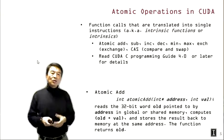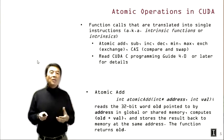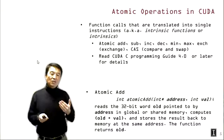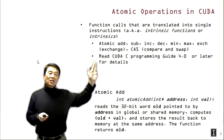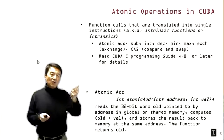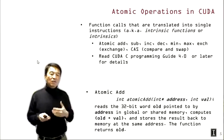Atomic operations in CUDA are made available to programmers in the form of function calls that are translated into single instructions. In literature, we refer to these as intrinsic functions, or just intrinsics. We have function calls that allow us to do atomic add, subtract, increment, decrement, minimum value, maximum value, exchange, and compare-and-swap.